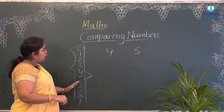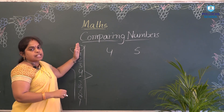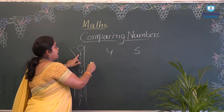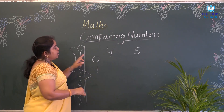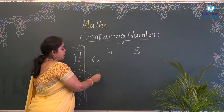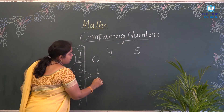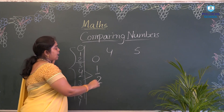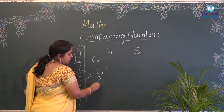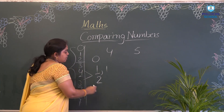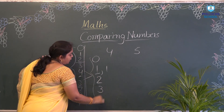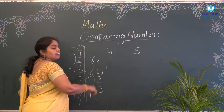First is 0 — 0 means nothing. After that comes 1, we are adding one more. Then 2 — how does 2 come? 1 plus 1 again. Then the next number is 3. Like that, the number order is increasing.